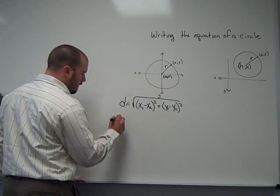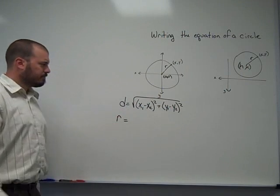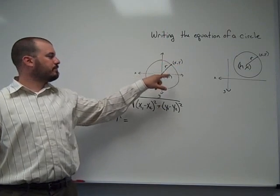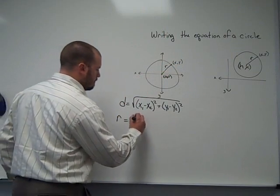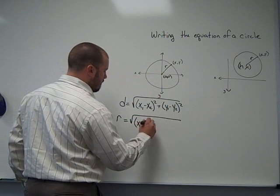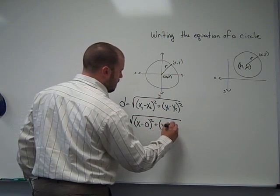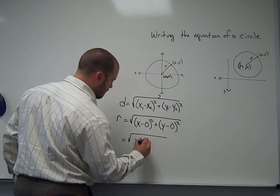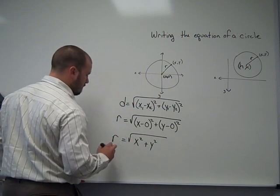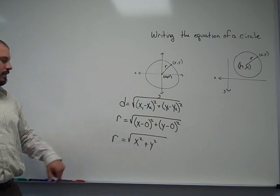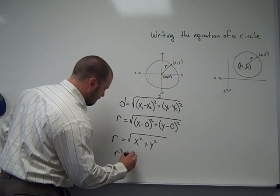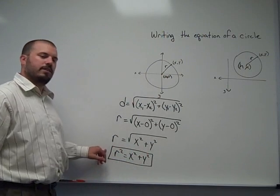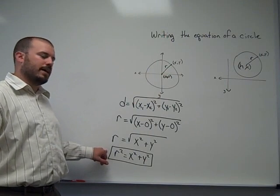So our distance, really what we're referring to here is the radius length. And our points that we're finding the distance between are x, y and the origin. So x minus 0 squared plus y minus 0 squared, which simplifies to, and then we would just square both sides. So this is the equation of a circle centered at the origin: r² = x² + y².